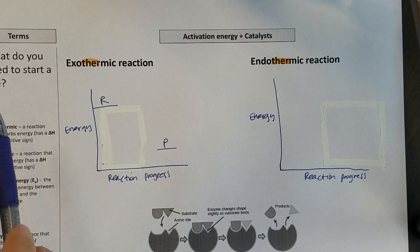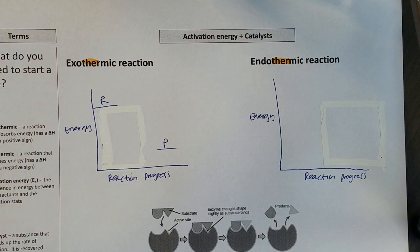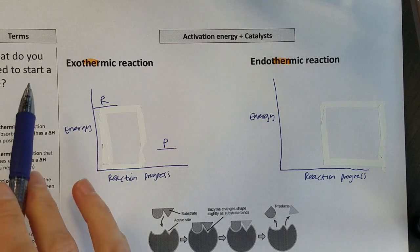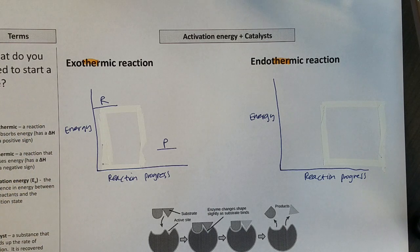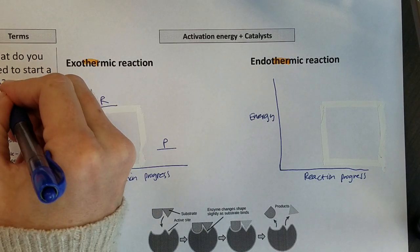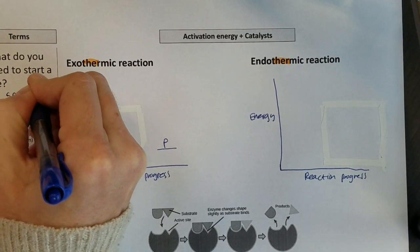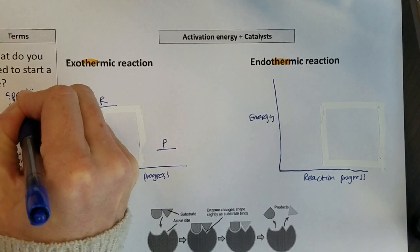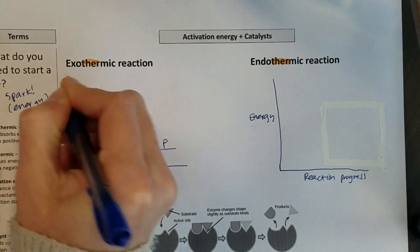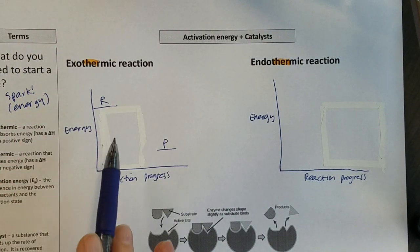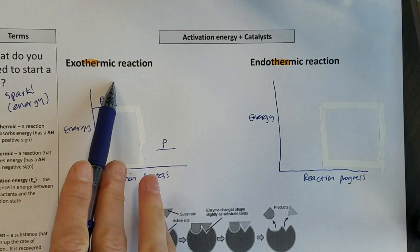So a fire would be a good example of an exothermic reaction. It's giving off lots of energy, but a fire needs something to start it. You need some kind of spark, and that is some kind of energy to get that fire started. So I have to first put energy in,